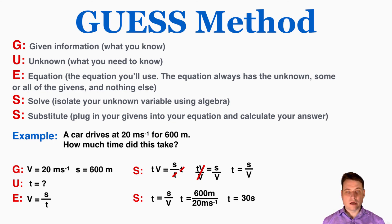Finally, solve by isolating the unknown variable into one side of the equation, and then substitute your numbers in to solve the problem. So that's the basic structure of how we use the GUESS method in physics.